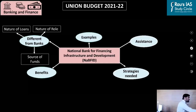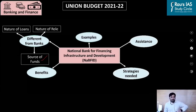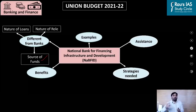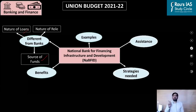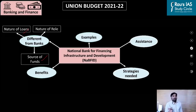The first difference is the source of funds. Normal banks rely on depositors' money to give loans, but the development bank would rely on the government's funding to give long-term loans to the infrastructure sector. Secondly, normal banks give both short-term and long-term loans, whereas a development bank specializes in giving long-term loans.